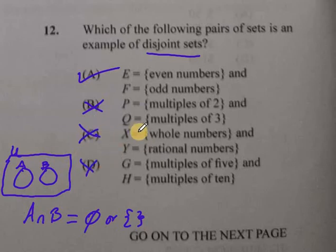All of these are out. But let's look at C. Whole numbers and rational numbers. All whole numbers are rational numbers. In fact, rational numbers are numbers that can be written as a fraction, an integer divided by another integer.